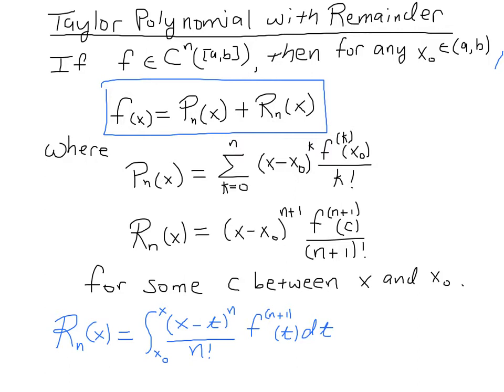Okay, so what we're going to do in this video is we're going to derive the remainder term. Now the remainder term will ultimately give us an expression for the error, that is, the absolute value of the difference between f of x and P_n of x.